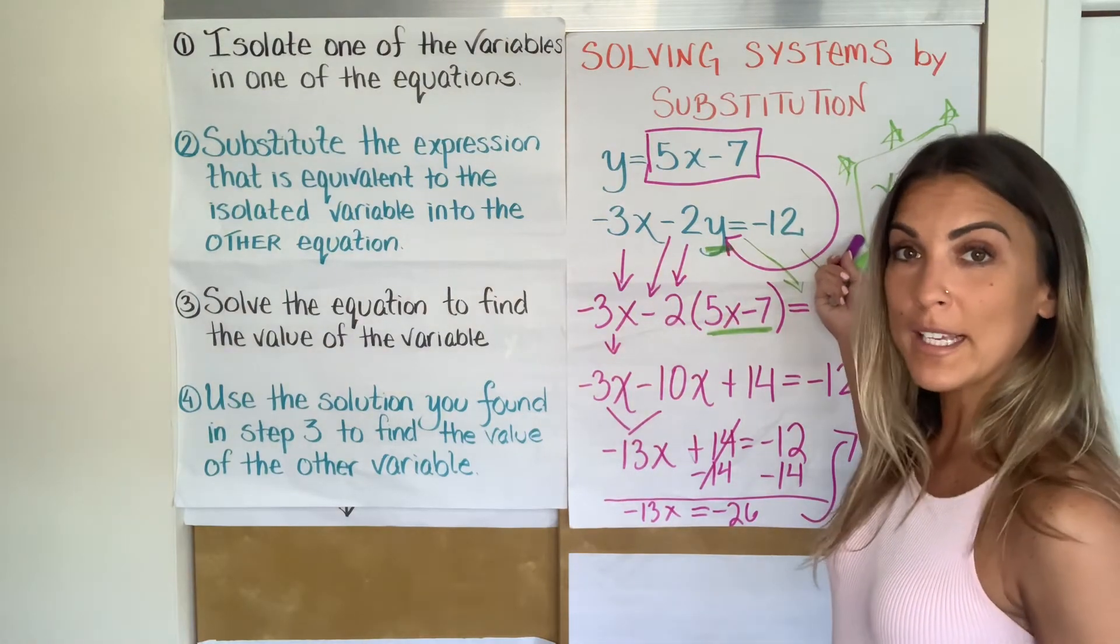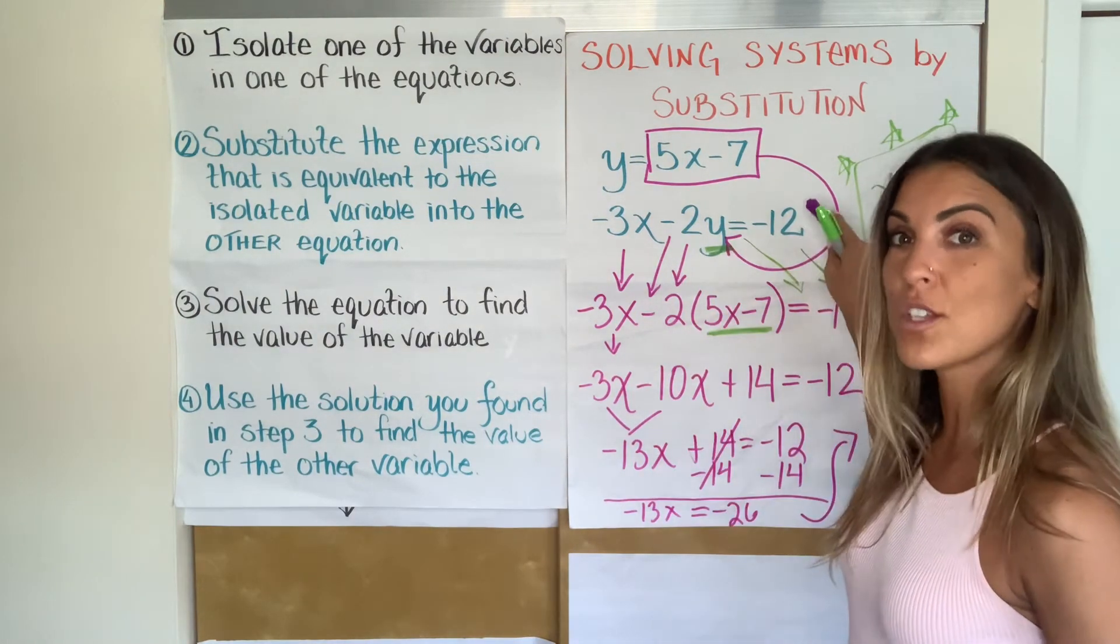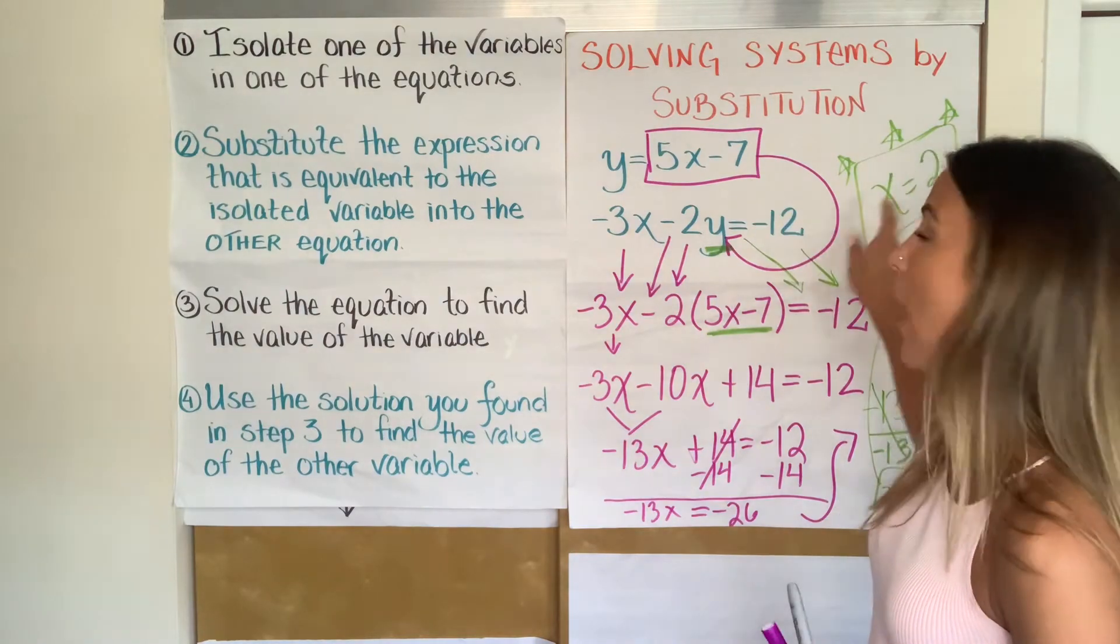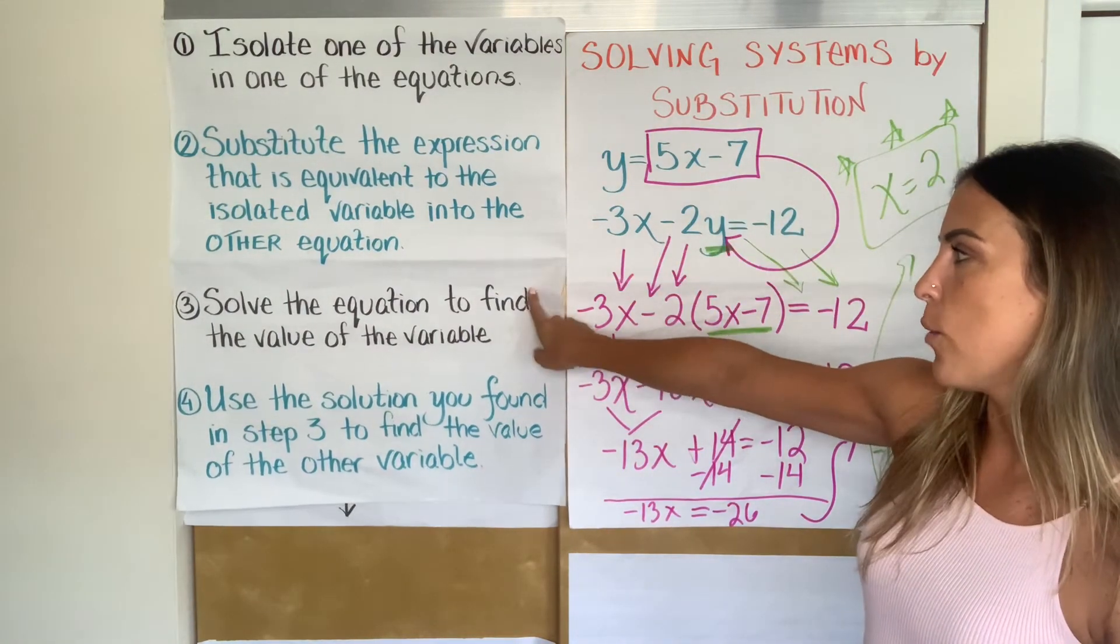Before we even look at step four for a second, think about what we're doing. We're solving systems. So what is the solution of a system? The solution of a system of linear equations is an ordered pair that's going to make both equations true. But an ordered pair has an X and a Y. And so far we have an X. So hopefully, you know what the next step is. We have to find that Y. We've got part of the answer. Now we need to find the Y. We do have the X coordinate. So step three is done. We solved the equation.